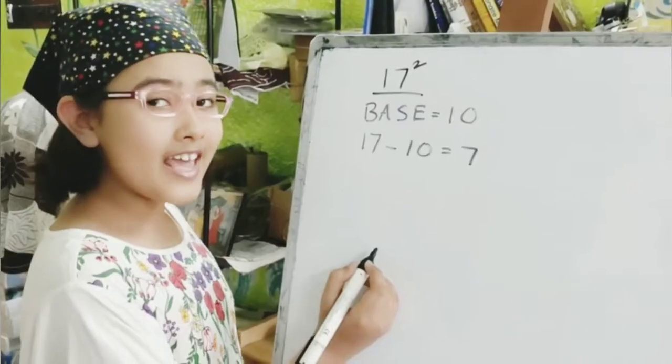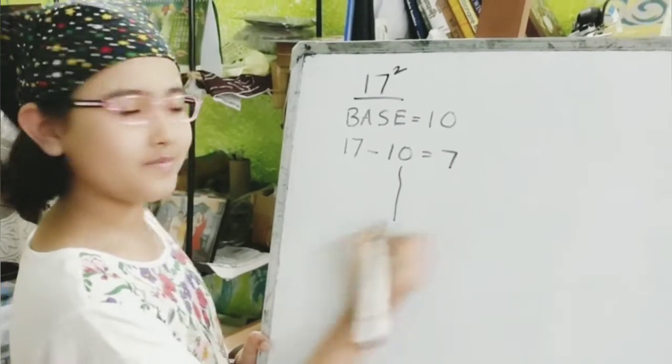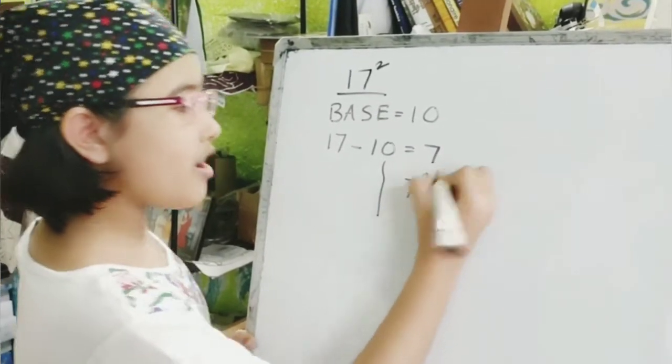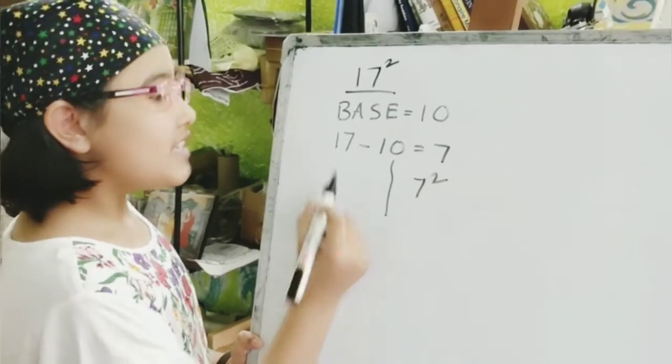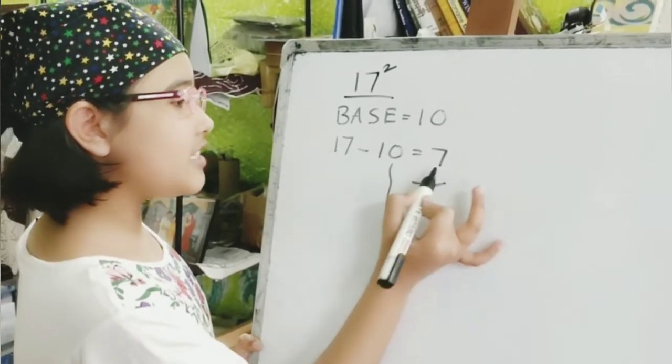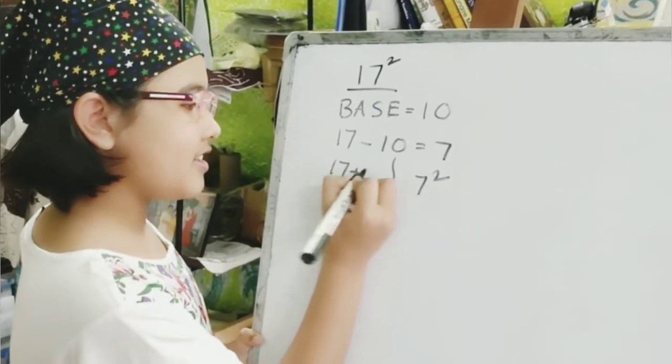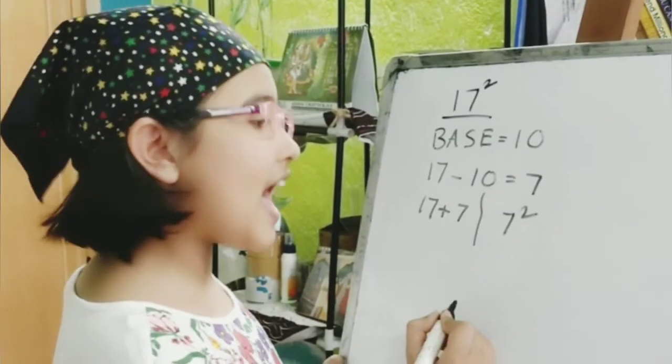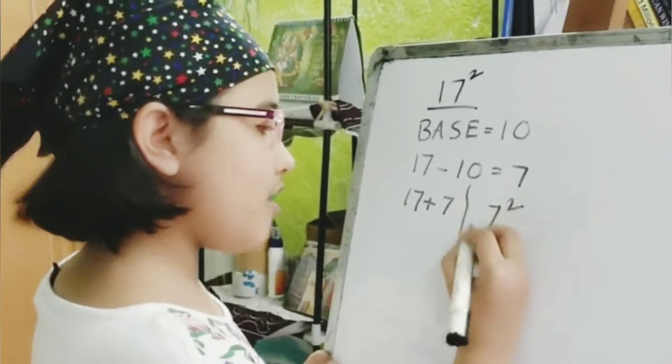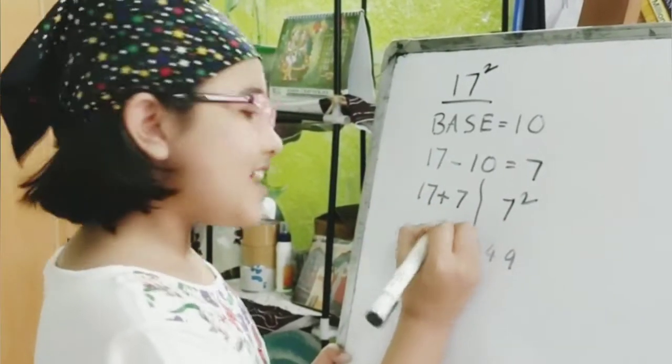The next part, we're going to divide in two parts. First, there is 7 square. That is the difference. And then, we have to add the difference and the number together. Now, we will write the answers as well. 7 square is 49 and 17 plus 7 is 24.